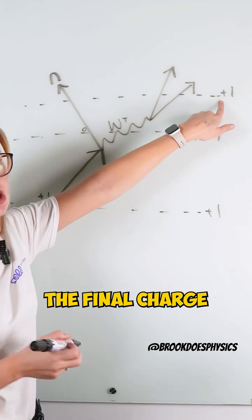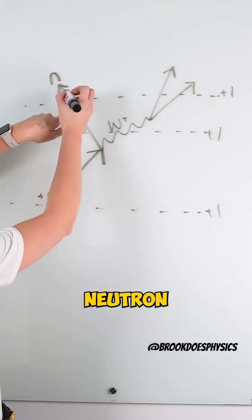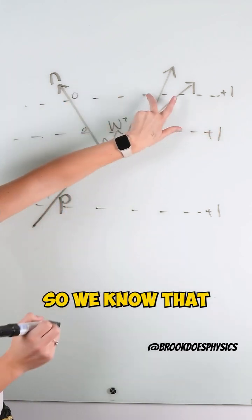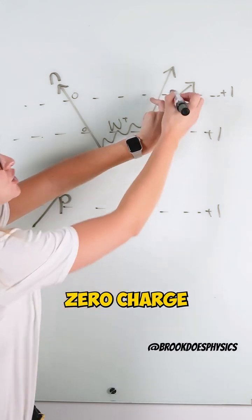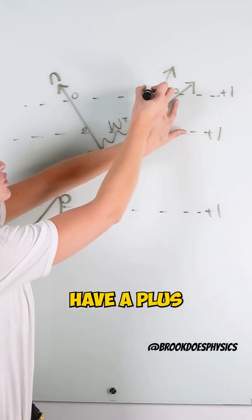And again, the final charge may be plus one, we've passed through a neutron, which is zero charge, so we know that one of these has to have zero charge, and one of these has to have a plus one charge.